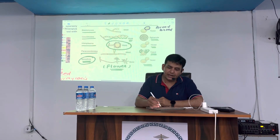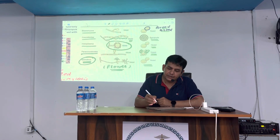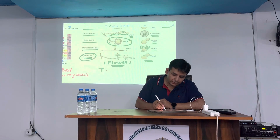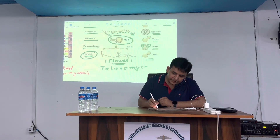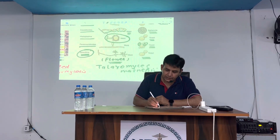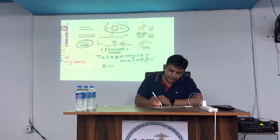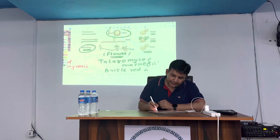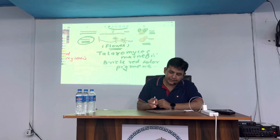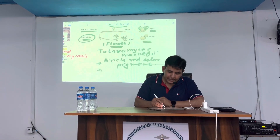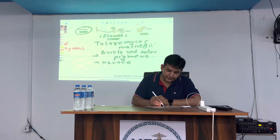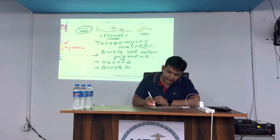Rhinosporidiosis has a much bigger spherule appearance. Moving on, we also have Talaromyces marneffei, which causes talaromycosis. This produces a red pigment and is commonly seen in HIV-positive persons. It also has a characteristic brush border conidial arrangement.